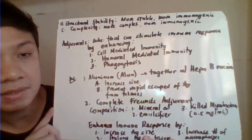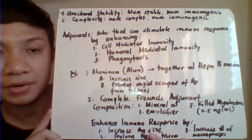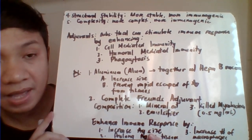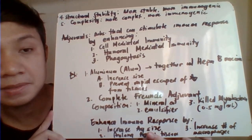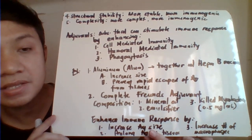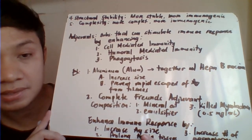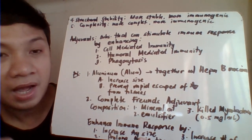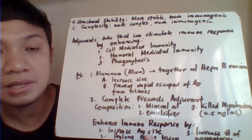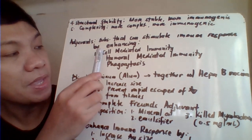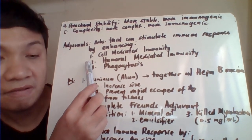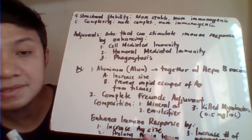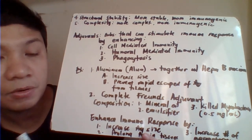Additional factors include structural stability — the more stable the structure of a molecule, the more immunogenic it is — and complexity — the more complex the structure, the more immunogenic. We also have adjuvants, which are substances that enhance our immune response by stimulating cell-mediated immunity or humoral-mediated immunity, helping T and B lymphocytes, and enhancing the activity of phagocytes. An example of an adjuvant is aluminum or alum.